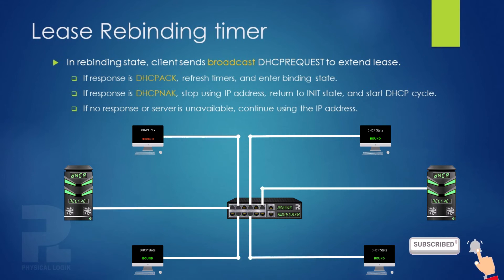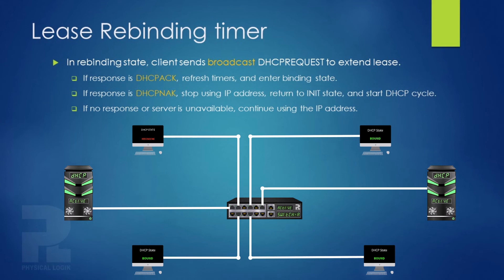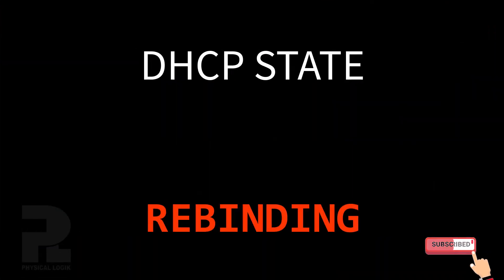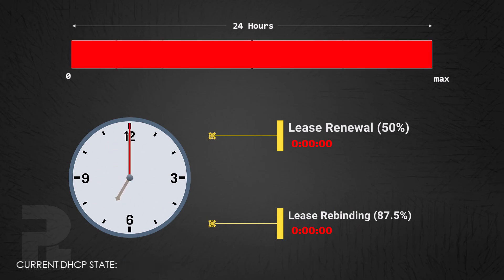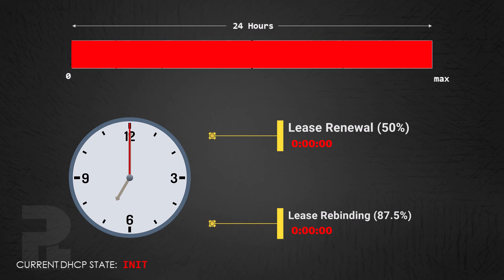However, if the DHCP client receives a DHCP negative acknowledgement message instead, it must stop using this address and return to the initializing state, where it will restart the DHCP cycle. In the event that the client still does not receive a response after many attempts and the lease expiration timer expires, the client must stop using this IP configuration and return to the initializing state, thus restarting the DHCP cycle.